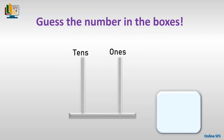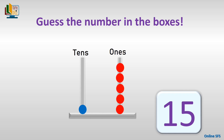Now, guess the number in the boxes. Let's first count the beads in the tens column — there is one bead in the tens column. Now let's count the beads in the ones column: one, two, three, four, five. So what number does the abacus show? One in the tens and five in the ones makes fifteen. Very good.